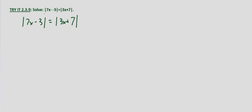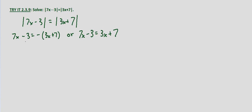We have absolute values isolated on each side, so we'll set this equal to the negative of the right-hand side and the positive of the right-hand side. So: 7x minus 3 equals negative 3x plus 7, or 7x minus 3 equals 3x plus 7. We distribute the negative on the right-hand side: 7x minus 3 equals negative 3x minus 7.